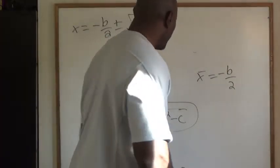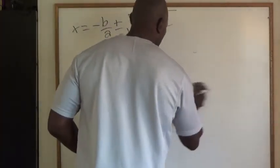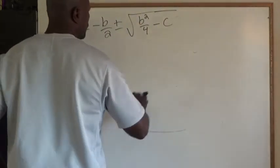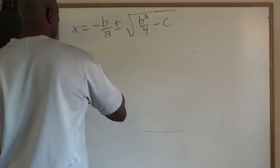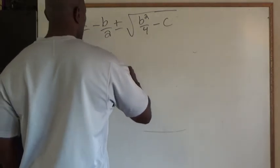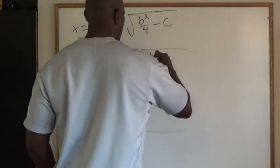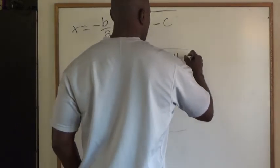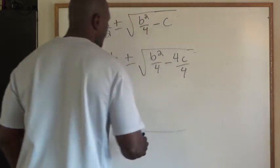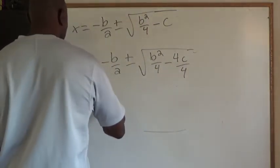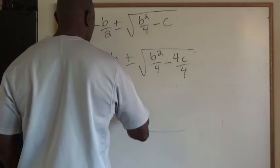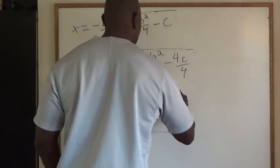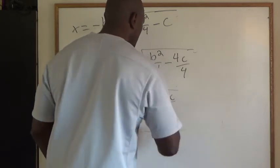Okay, so let me find a common denominator in that radical. I would have to put C over 4, that would be 4C over 4. So X will be negative B over 2 plus or minus the square root of B squared over 4 minus 4C over 4. And so X will be negative B over 2 plus or minus the square root of B squared minus 4C over 4.